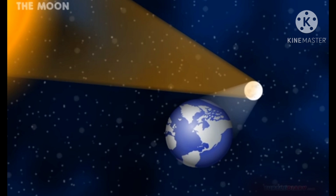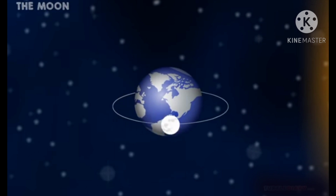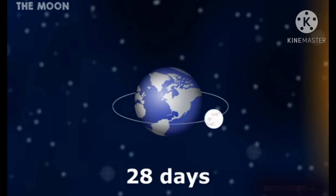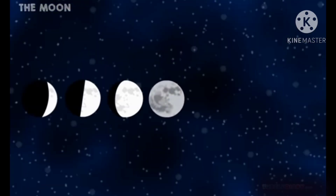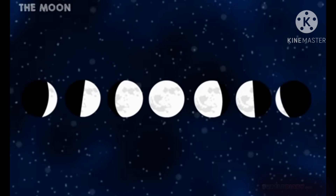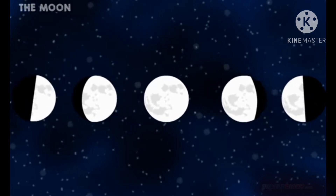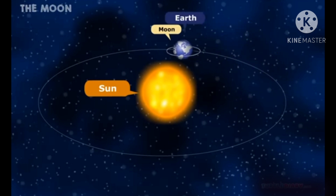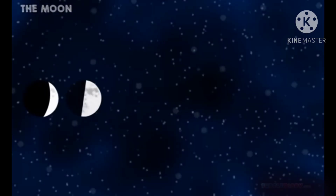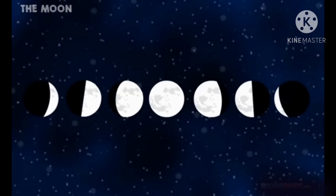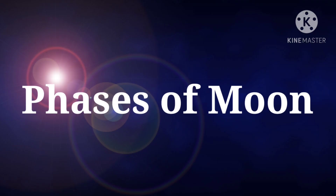The Moon revolves around the Earth in a definite path and takes nearly 28 days to complete one revolution around the Earth. We all observe that the everyday shape and size of the Moon appears to change gradually. This is because of changes in the relative position of the Earth and the Moon with respect to the Sun. The different appearances of the Moon on different days are known as the phases of the Moon.